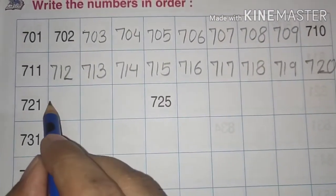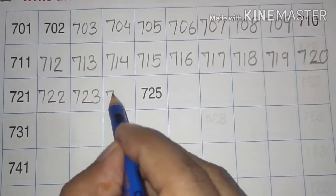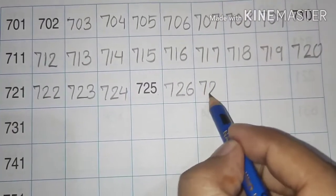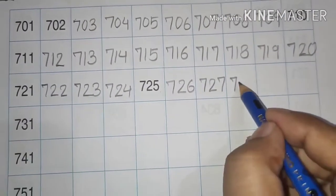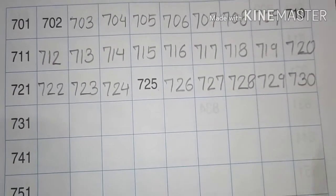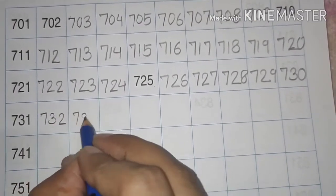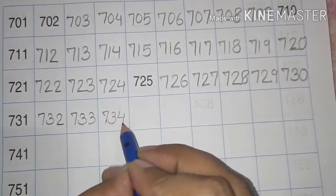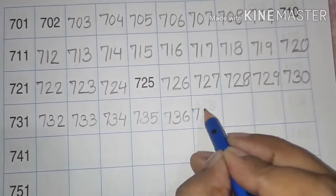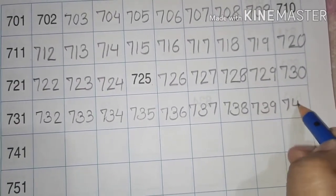Then 721, 722, 723, 724, 725, 726, 727, 728, 729, 730. Okay, then 731, 732, 733, 734, 735, 736, 737, 738, 739, 740.